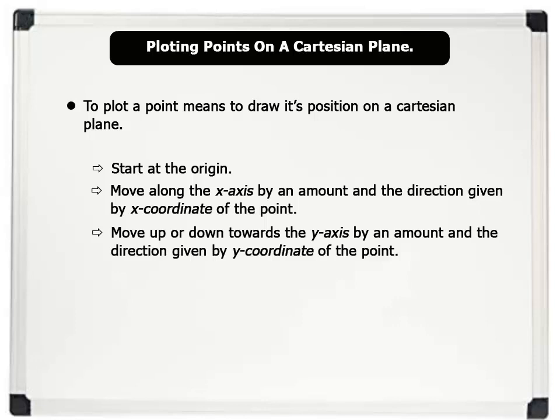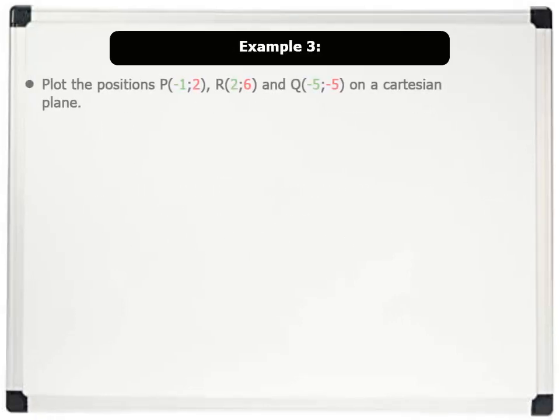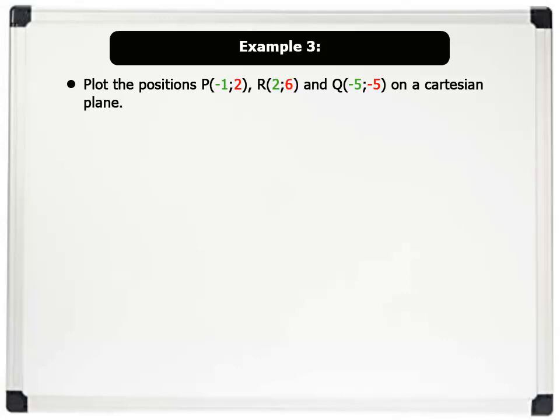Let us see our final example. Example 3. Plot the positions P (minus 1, 2), R (2, 6), and Q (minus 5, minus 5) on a Cartesian plane. Solution.